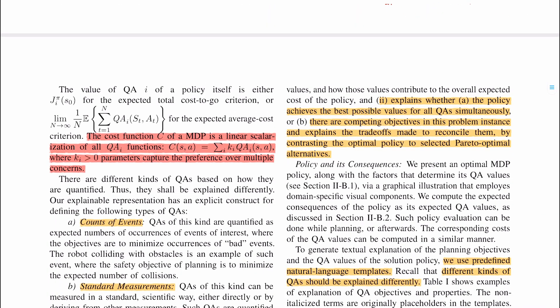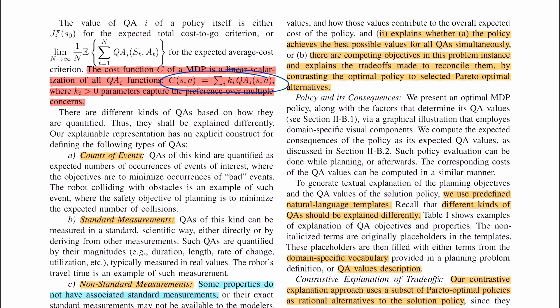An example explanation from the robot could be: 'While the green path I took takes longer than the red path, it has lower intrusiveness and less chance of collision.' This makes sense for two reasons: first, the explanation is defined in terms of objectives — some are achieved, some aren't. Second, the objectives are called time, intrusiveness, or safety, which are very domain-relevant and human-understandable.